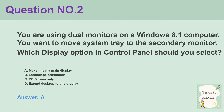Question number 2. You are using dual monitors on a Windows 8.1 computer. You want to move the system tray to the secondary monitor. Which display option in control panel should you select? A. Make this my main display. B. Landscape orientation. C. PC screen only. D. Extend desktop to this display. Answer: A.